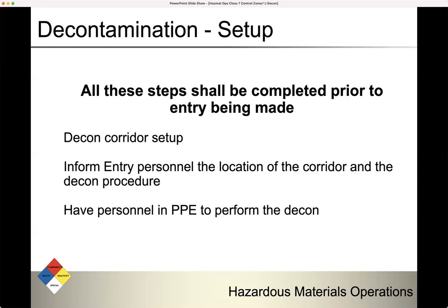Before entry is made, three things need to be in place: your decon corridor needs to be set up; entry team personnel need to know the location of the corridor and the decon procedure; and you need personnel in PPE ready to perform decontamination.